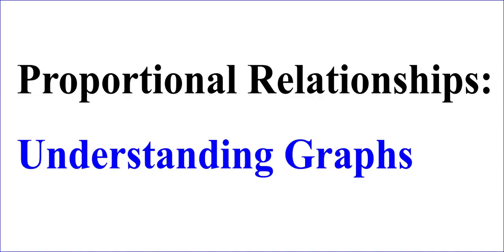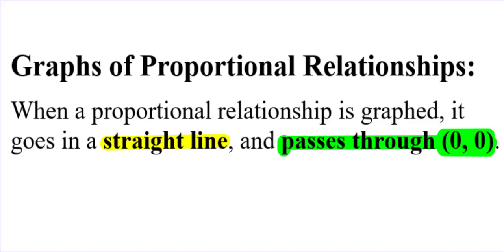Let's review one more thing about proportional relationships, and that's understanding graphs. When a proportional relationship is graphed, it goes in a straight line, and it will also pass through the ordered pair (0, 0), which also has a name. It's called the origin.